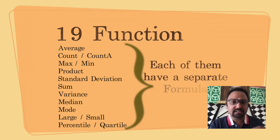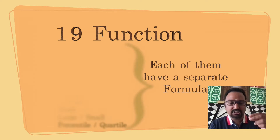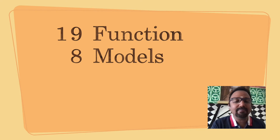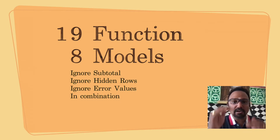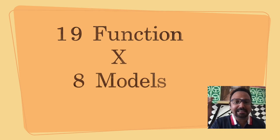There is one function and there are formulas already. If you look at aggregate, then we can calculate one function with eight models. We can give instructions — for example, I need to ignore the hidden rows error, or if there are any subtotal instructions already in between the formula. Each sub-function can be worked out in eight different models.